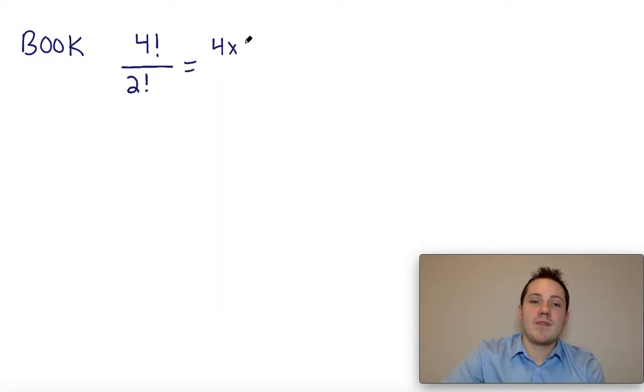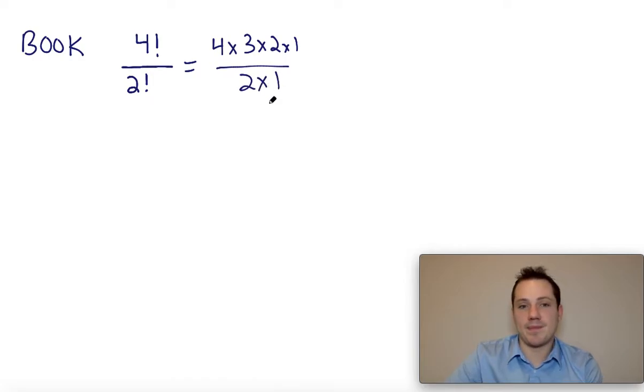So that this would be four times three times two times one over two times one. The twos cross and we just end up with 12.